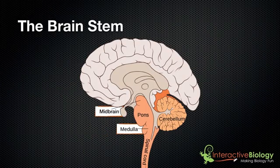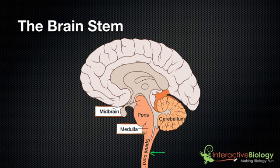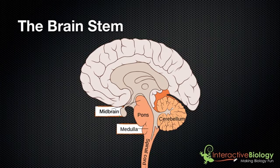Here we're looking at the human brain. We have the spinal cord, and where it enters the cranium — the skull — it then becomes brain. The first part of the brain that we enter is called the brainstem, and the three parts of the brainstem are the medulla, the pons, and the midbrain.